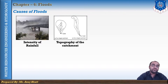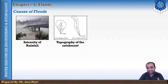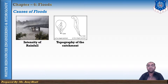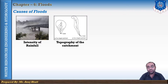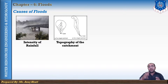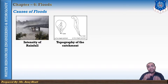The second cause is the topography of the catchment, which also affects flooding. A larger catchment size produces more flood. A catchment area with steep slopes increases runoff and sediment inflow due to the high velocity of flow. A catchment area with flatter slopes reduces runoff and reduces sediment inflow due to low flow velocity.